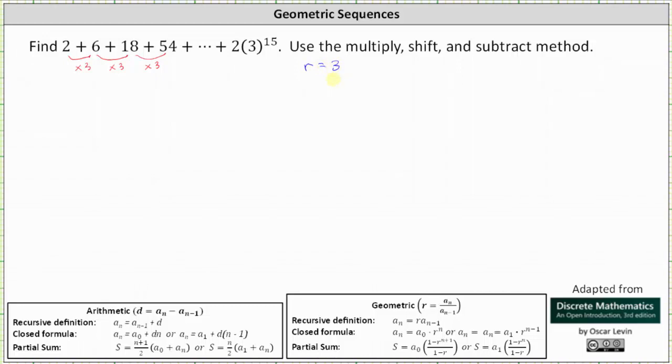We can also determine the common ratio r by selecting any term in the sequence and dividing by the term before it. Notice 6 divided by 2 is 3, 18 divided by 6 is 3, 54 divided by 18 is 3 and so on.